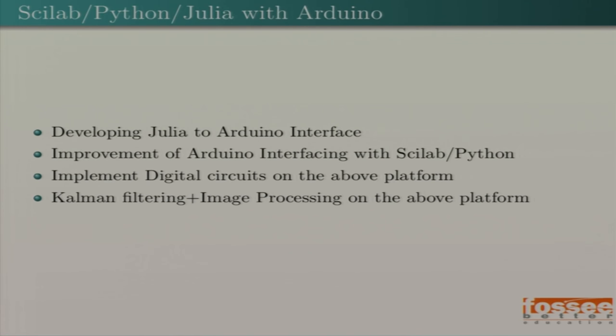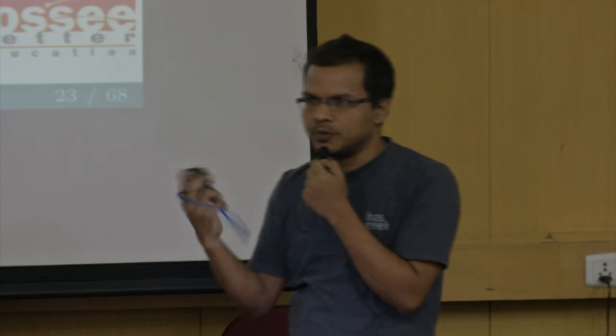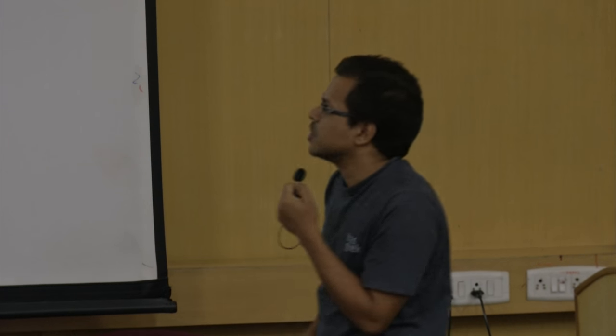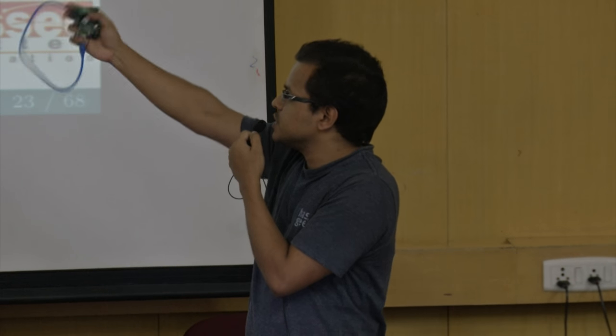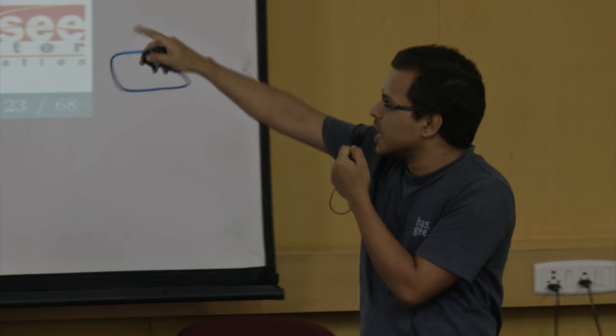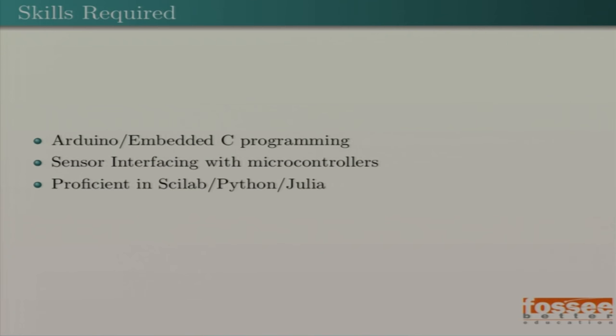You can see the Arduino board with a shield mounted on it. The shield has mostly commonly used components like a potentiometer, LED, and LDR. You have to write experiments and develop APIs from Scilab and Python to Arduino — everything from scratch, as nothing has been done on that part yet. The second objective is to take the already existing interfaces from Scilab and Python to Arduino and implement some complex experiments on them. Then there are digital circuits on the same platform, and the last part is Kalman filtering and image processing. Last year, the interns who worked on this project actually published a book in their name, so whatever experiments you do will be included. The required proficiencies are the same: Arduino, sensor interfacing, Scilab, Python, and Julia.